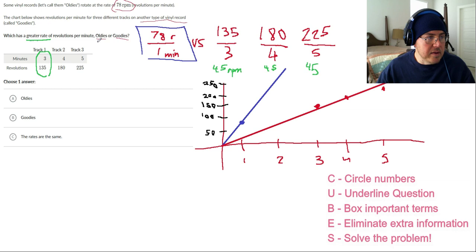Which has the greater rate of revolutions per minute? The oldies and the goodies? Well, I'm going to slam dunk this on the oldies. It's not even close. The graph shows it. The math shows it. And that is how you compare rates and proportional relationships on this lesson.